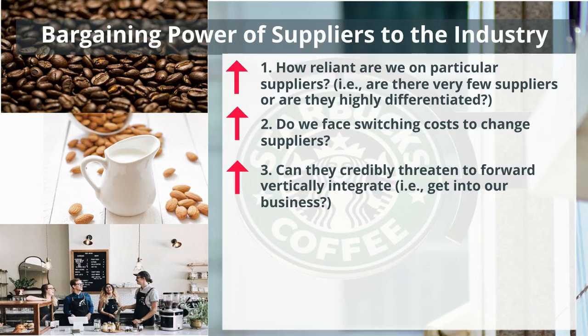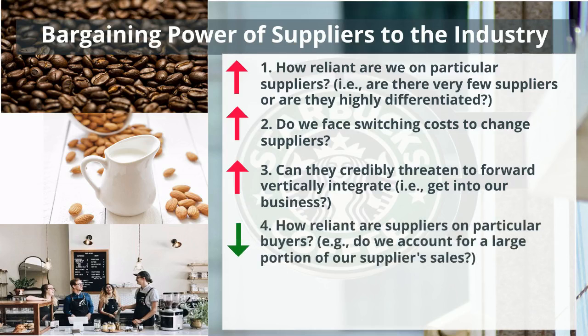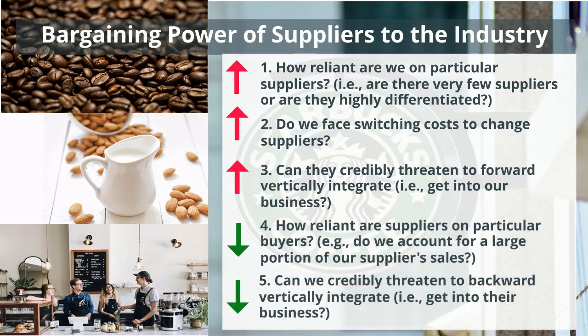On the other hand, we'll also ask how reliant suppliers are on particular buyers like us, and whether we can credibly threaten to backward vertically integrate into their business. These things will lower their bargaining power.